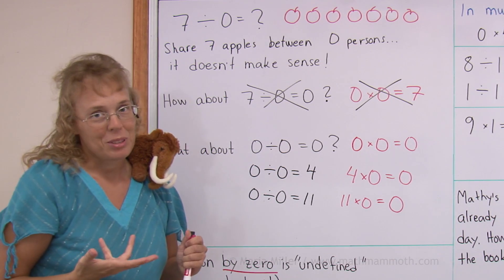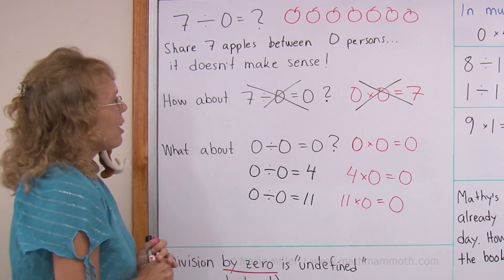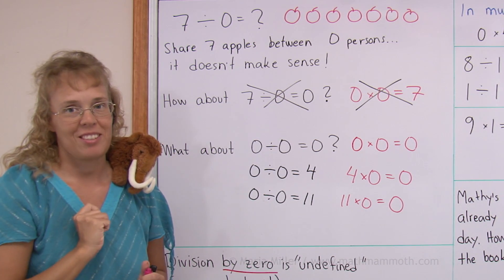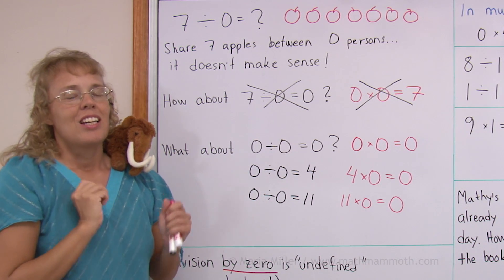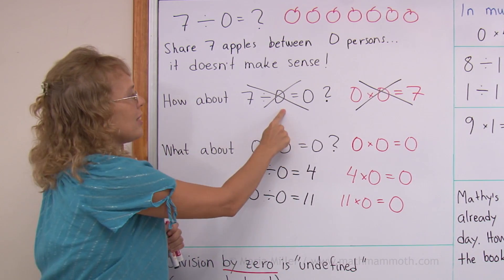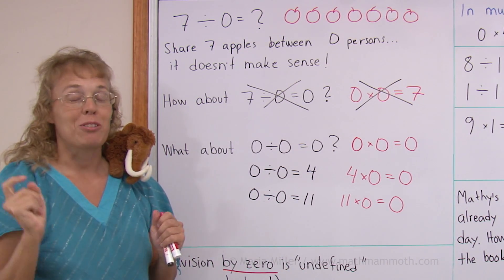So there are problems. And that is why we say that this kind of division by zero is undefined. What you can just simply remember is that you cannot do it. You cannot divide by zero, and you'll be all right.